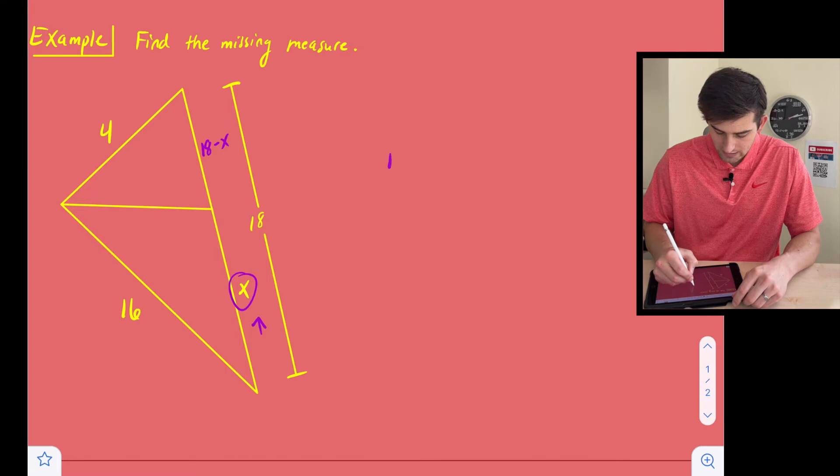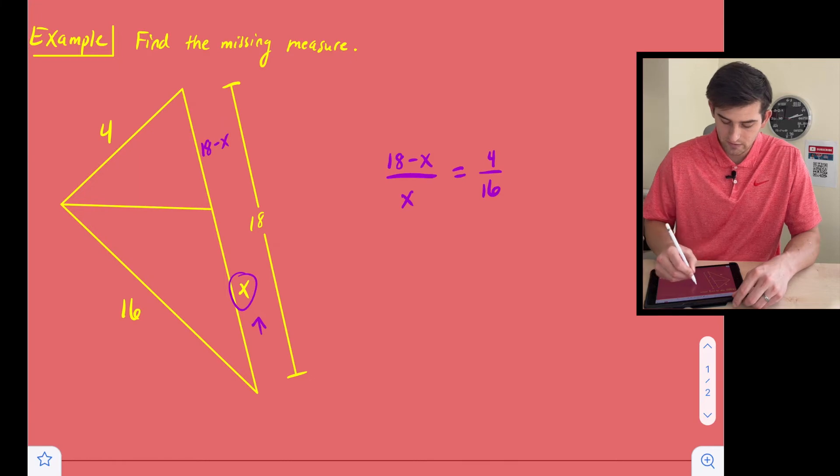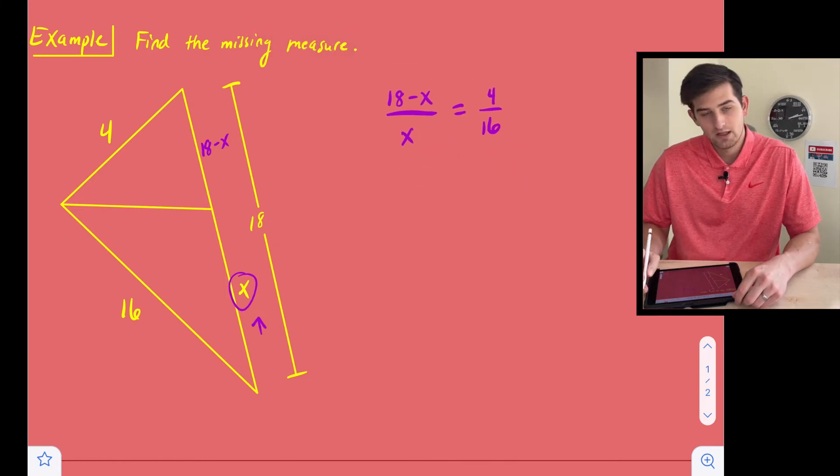So we can say 18 minus X over X is equal to 4 over 16. Okay, let's bump this up just a little bit, give us some more room to work below.